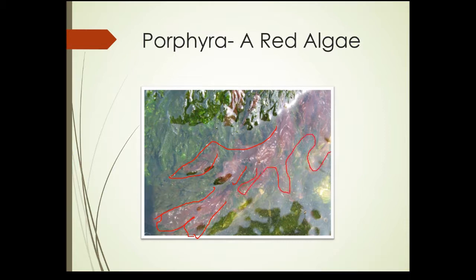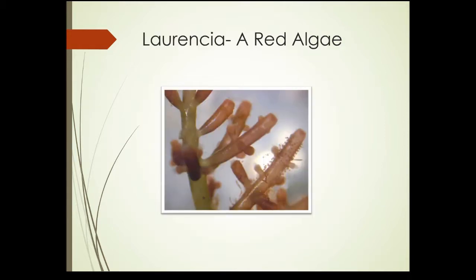You can see why they're called red algae. Here's another type, Laurencia, typical of branched filaments with this red color. But you can see a lot of green showing through in the main stem area, making them capable of photosynthesis.